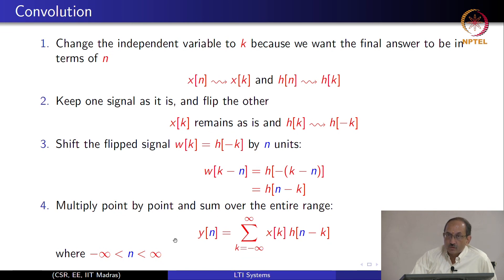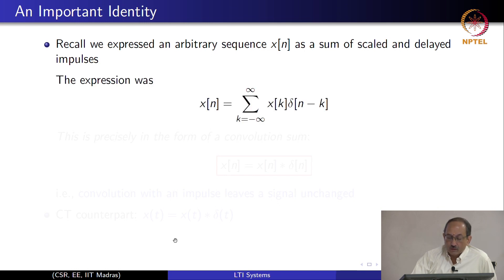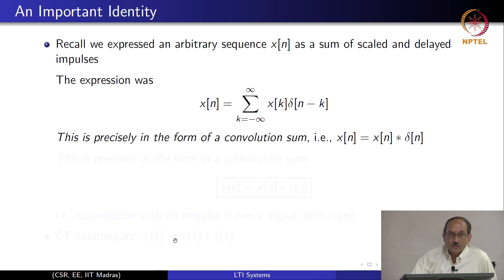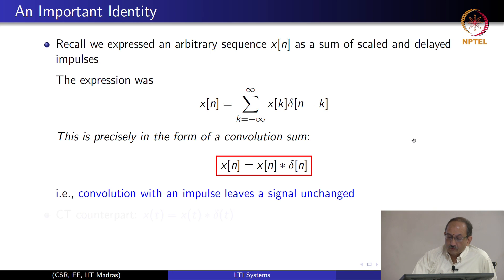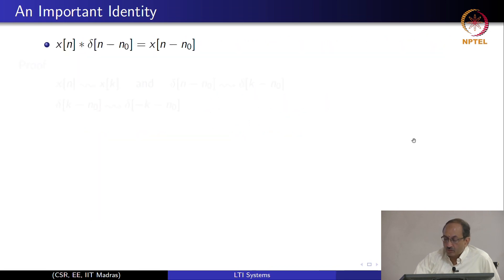An arbitrary sequence expressed as a sum of scaled and delayed impulses is exactly the form of a convolution sum — specifically x(n) convolved with delta(n). This is an important identity: convolution with the impulse gives the signal unchanged. Similarly, in continuous time, x(t) convolved with delta(t) gives back the original signal.